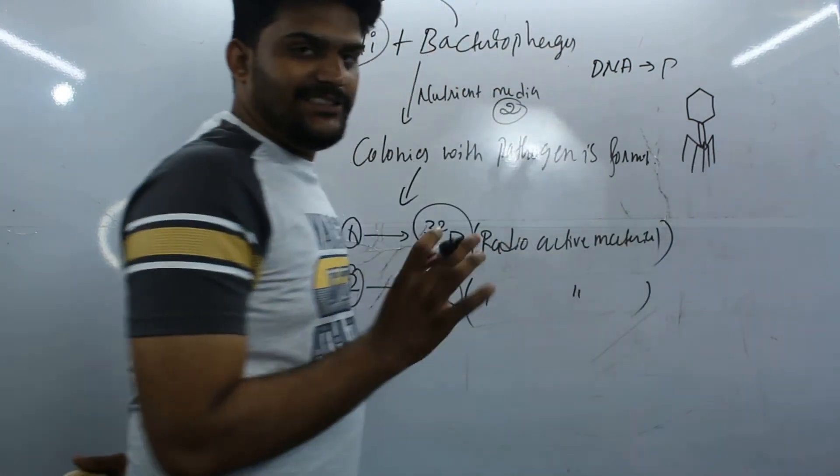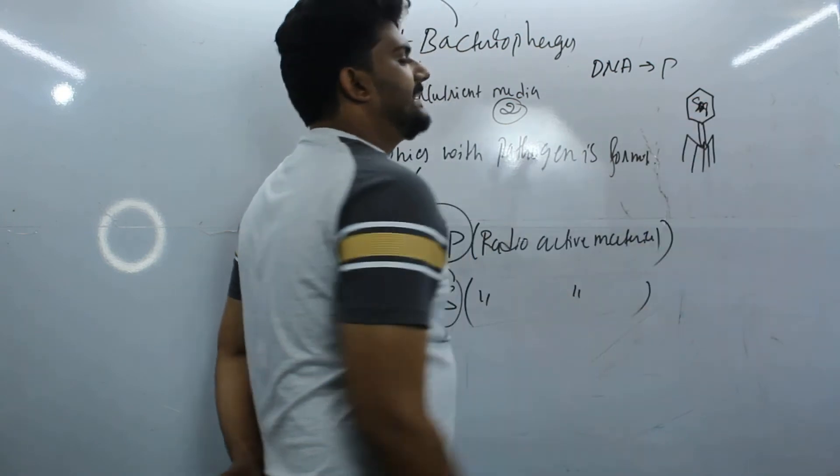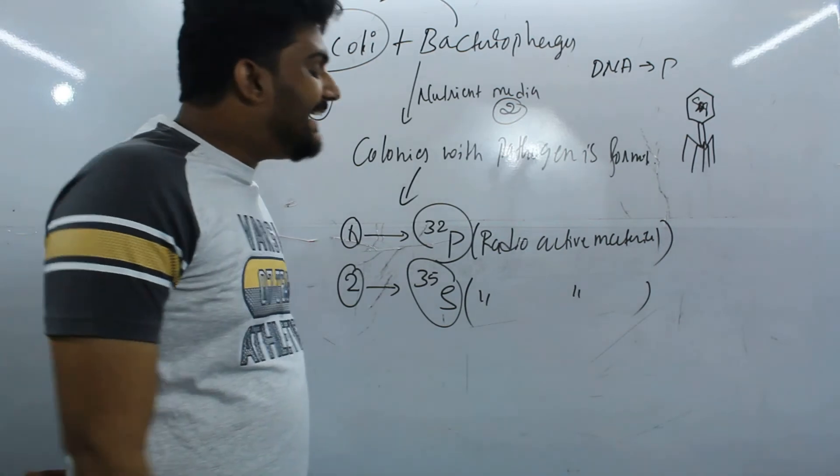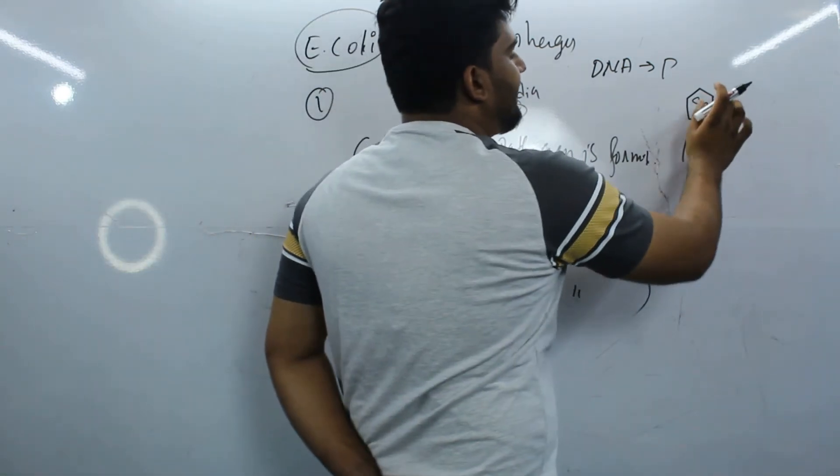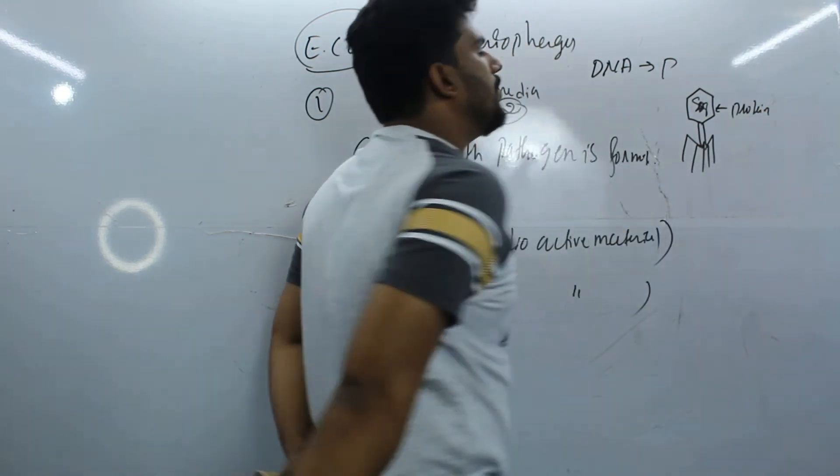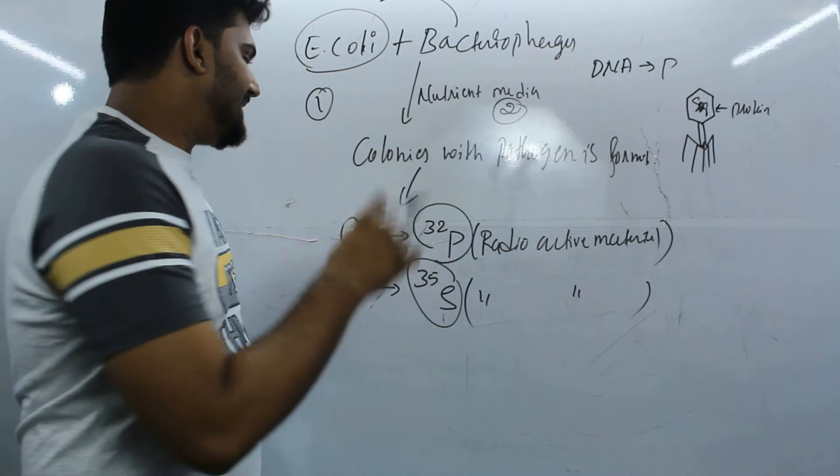this is a bacteriophage which contains RNA as genetic material. It has a rhomboidal head made up of protein. As you all know, protein contains sulfur. That's why sulfur was added into the second one.